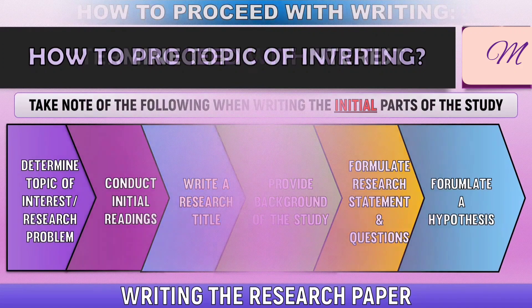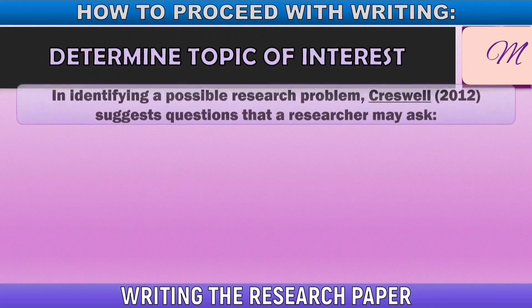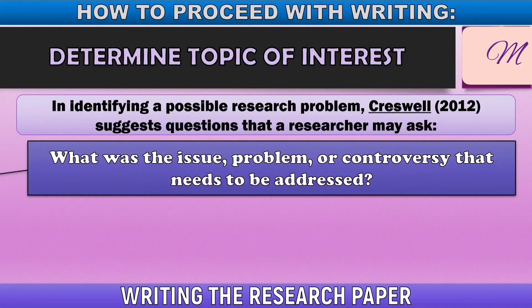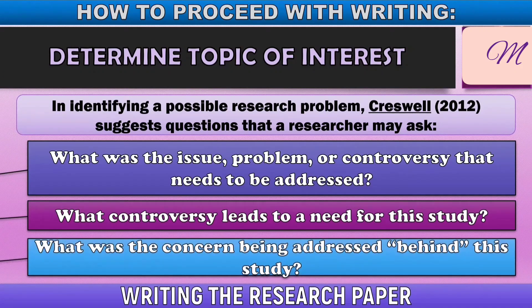At this point, let's talk about the first step, which is to determine the topic of interest. In identifying a possible research problem, Creswell in 2012 suggests the following questions: What was the issue, problem, or controversy that needs to be addressed? Second, what controversy leads to a need for this study? And last, what was the concern being addressed behind this study?